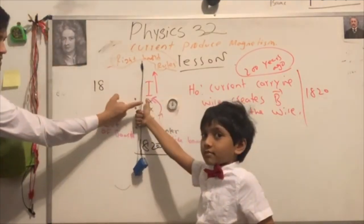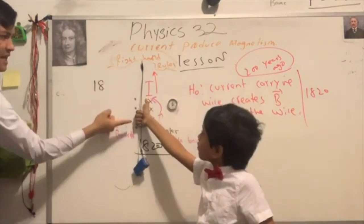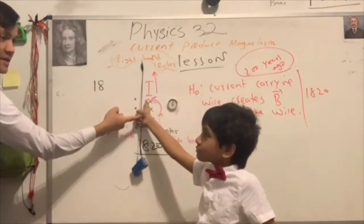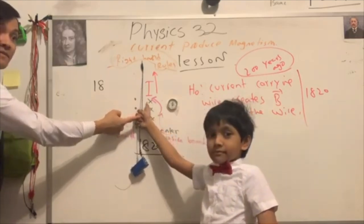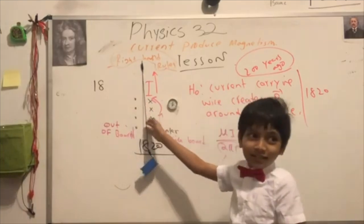So now his thumb is in the direction of the current and he curled his fingers around the wire. That's the direction of the magnetic field. Now you come over here and demonstrate it.